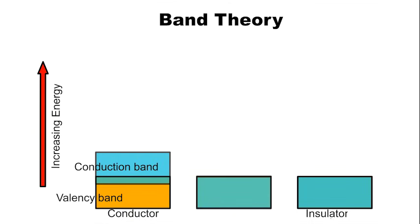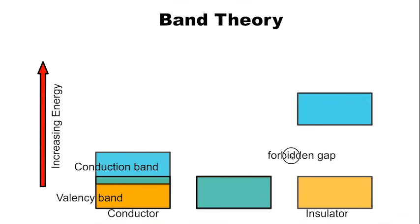What about an insulator? An insulator also has a valency band and a conduction band, but there is quite a large separation — a forbidden gap — for the electrons in the valency band to get to the conduction band. Because this gap is quite large, ranging from 6 to 9 electron volts, the electrons are unable to get into the conduction band and are therefore unable to become conductive. Hence, it is an insulator.